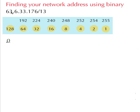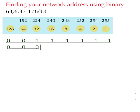So converting 63 into binary: 0, 0, 1 - that's 48, 56, 60, 62, 63. Then convert 6 into binary: 0, 0, 0, 0, 0, 1, 1.